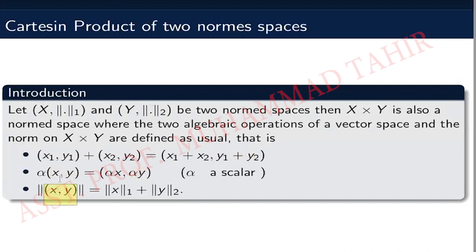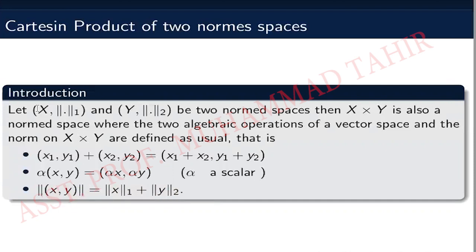Third, the norm on X cross Y: the norm of the ordered pair (x, y) is defined as the norm of x plus the norm of y. This is very important, as we use it in the closed graph theorem. When we write the norm of an ordered pair (x, y), we separate it into norm of x plus norm of y. When x is an element of X, norm 1 is applied, and when y is an element of Y, norm 2 is applied.